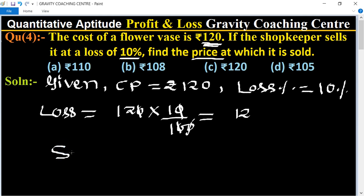Find the selling price. Selling price of the vase equals its formula: CP minus Loss. So its cost price is 120 and loss is 12, so equal to 108.